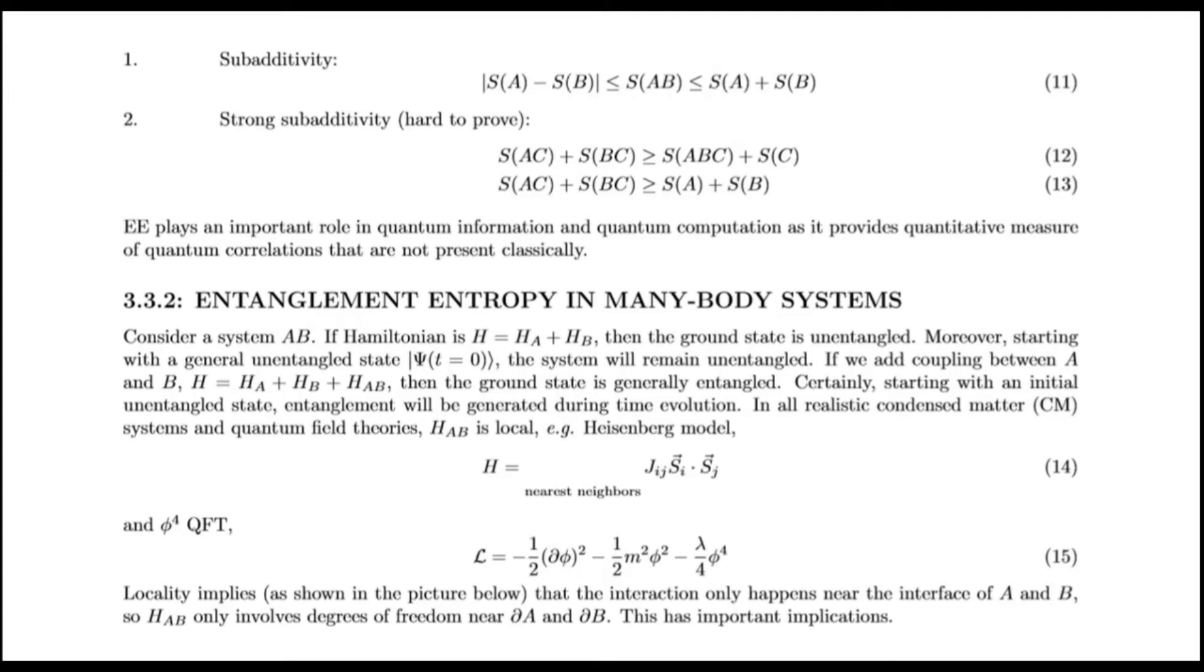Entanglement entropy in many-body systems. Consider a system A, B. If Hamiltonian is H equals HA plus HB, then the ground state is unentangled. Moreover, starting with a general unentangled state, the system will remain unentangled. If we add coupling between A and B, H is HA plus HB plus HAB, then the ground state is generally entangled.